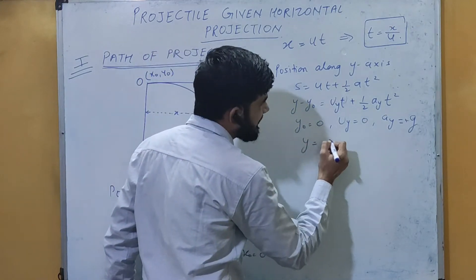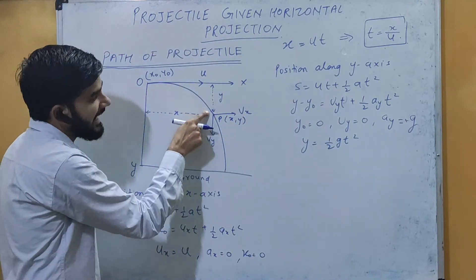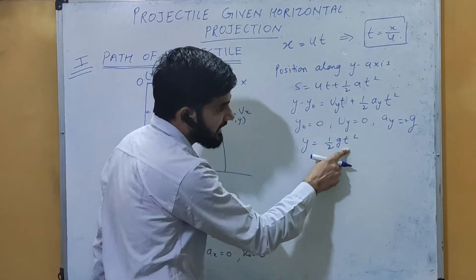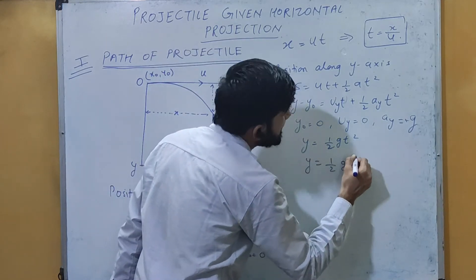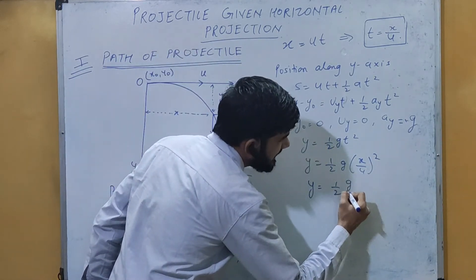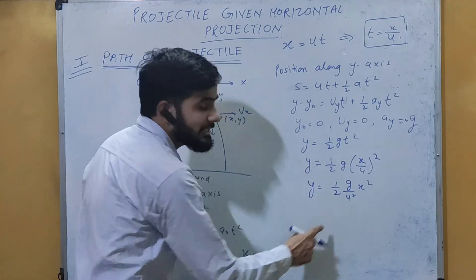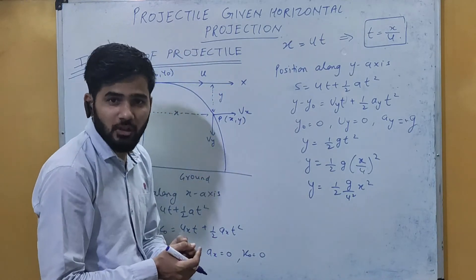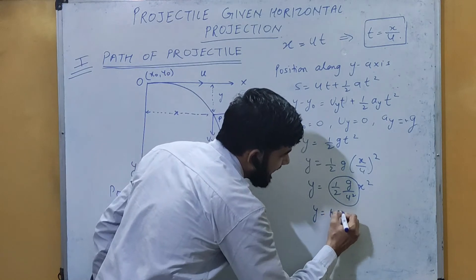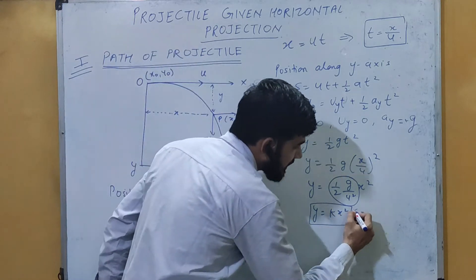Substituting all values, we get y = ½g·t². Since we have t = x/u, we substitute: y = ½g·(x/u)² = (g / 2u²)·x². Since g and u are both constants, we write ½g/u² = k (a constant). Therefore: y = kx².